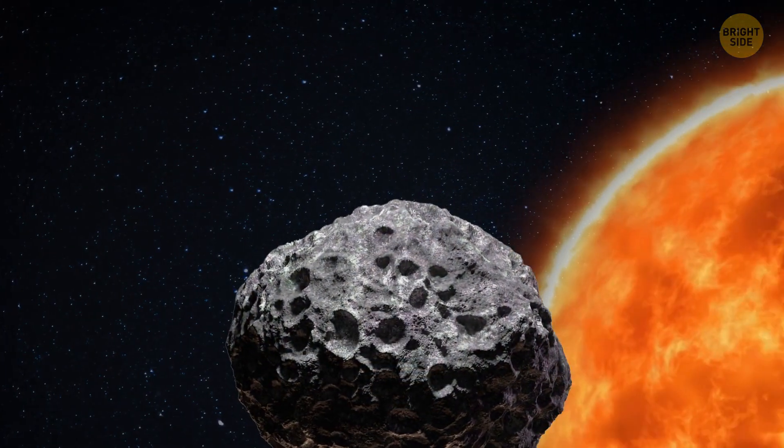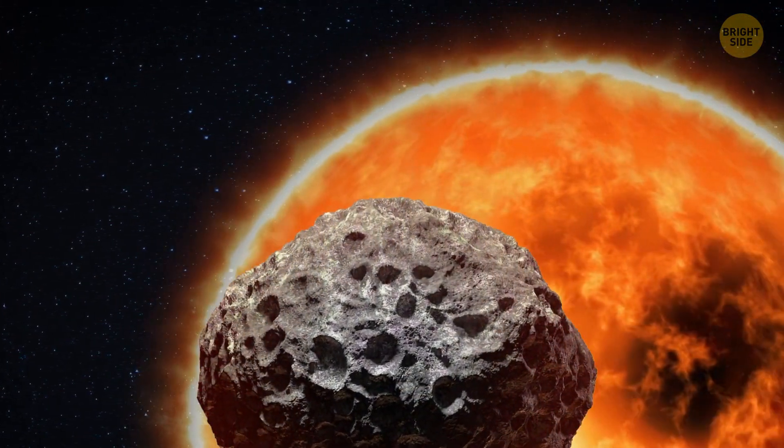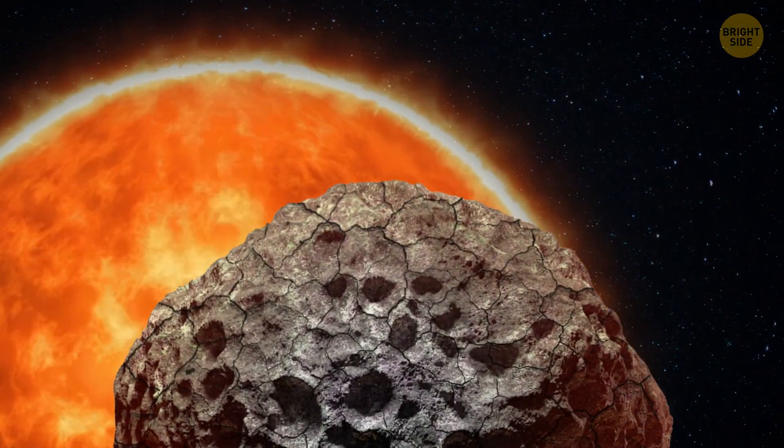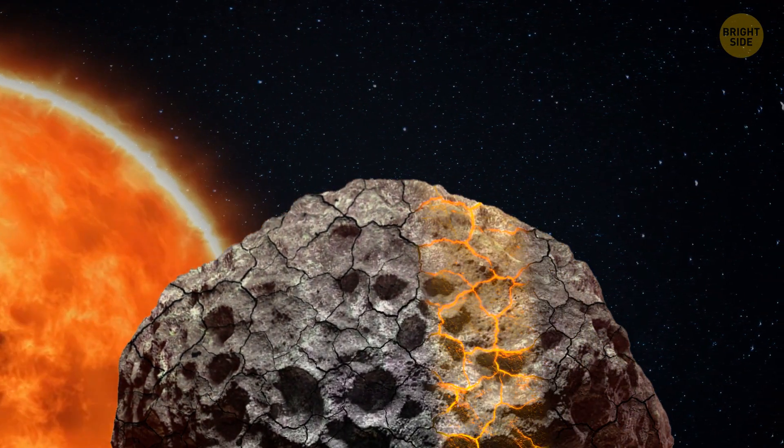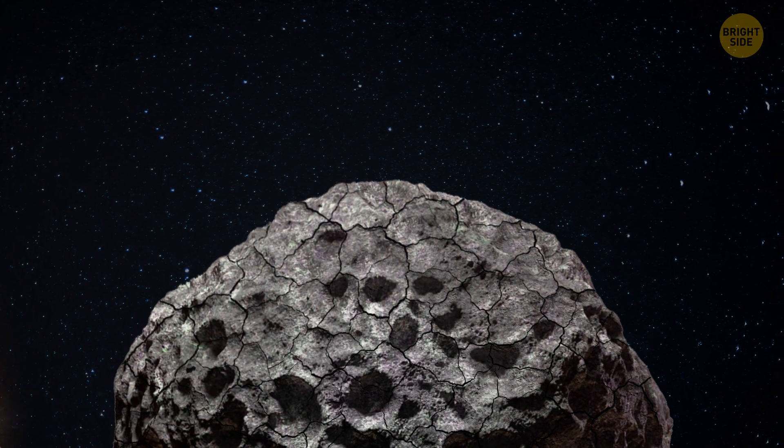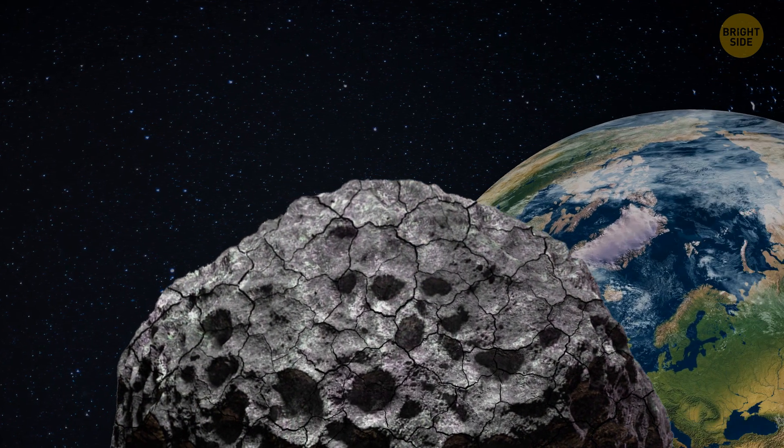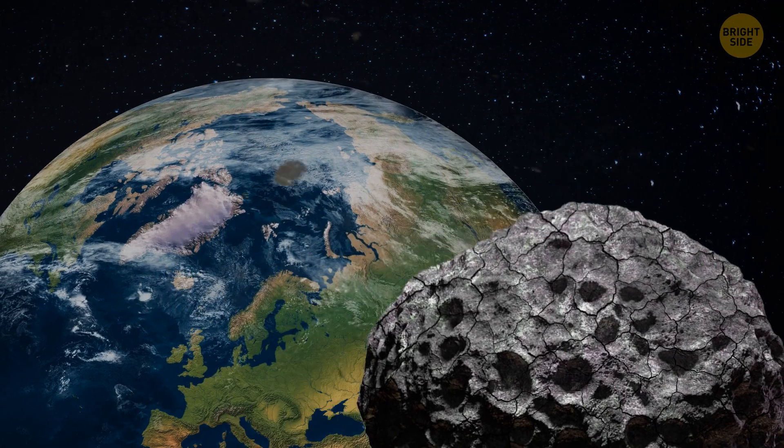Since the asteroid often passes by the sun, its surface is most likely to look like the dry bottom of a mud swamp. It's covered in scales and cracks. As it flies past Earth, these scales break off and cause meteor showers.